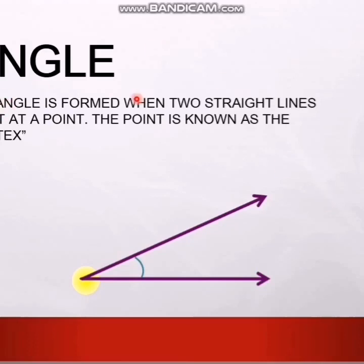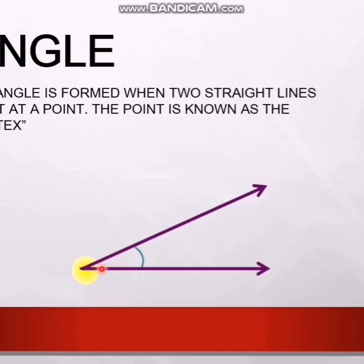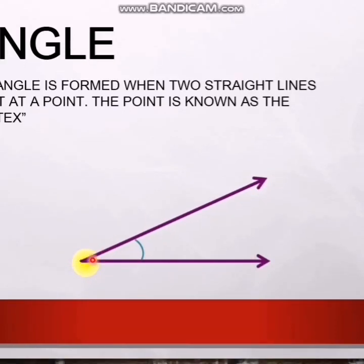What is an angle? An angle is formed when two straight lines meet at a point. Here we have two straight lines, and these two straight lines meet at this yellow point.